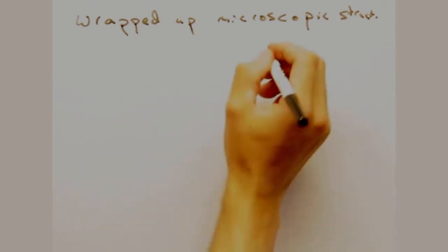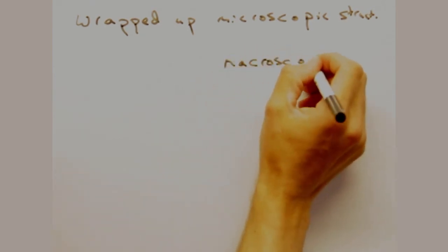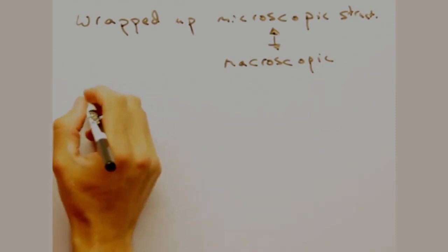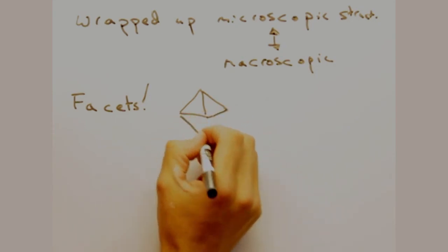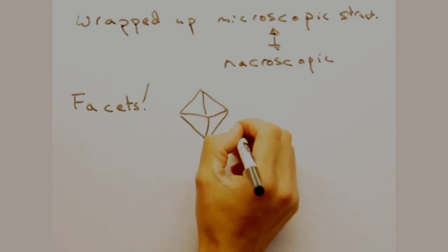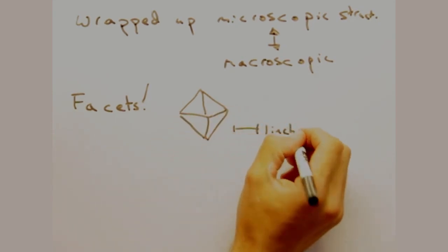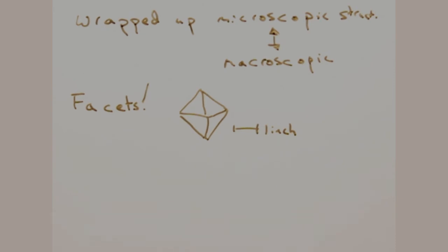And with that, we've wrapped up our core discussion of the microscopic structure in crystals. But it would be good to relate the microscopic to the macroscopic structure of materials. Earlier, Nicole, you said that most people think of facets when they think of crystals. When you see facets in a crystal, what you're really seeing is the exposed planes of the unit cell, all aligned in the same direction.